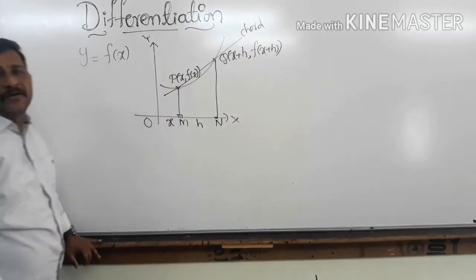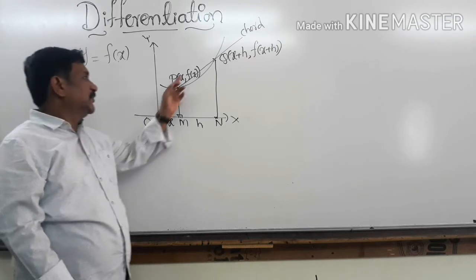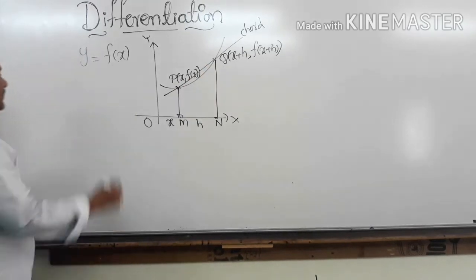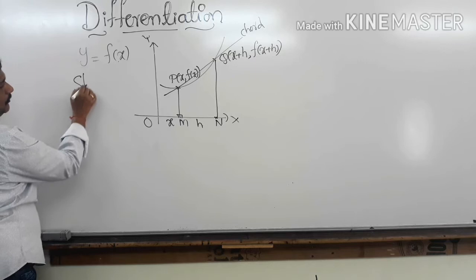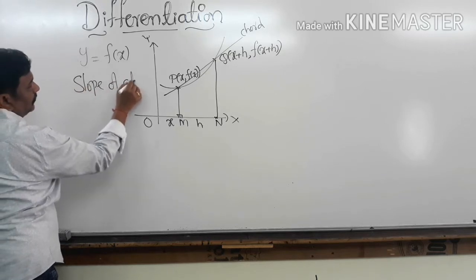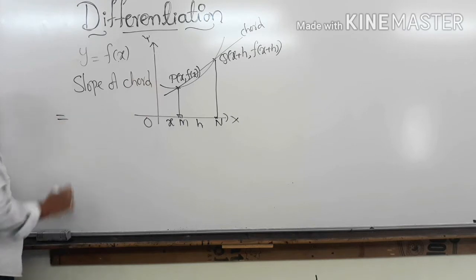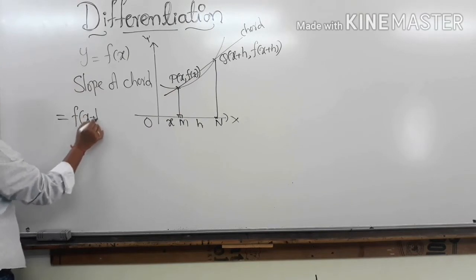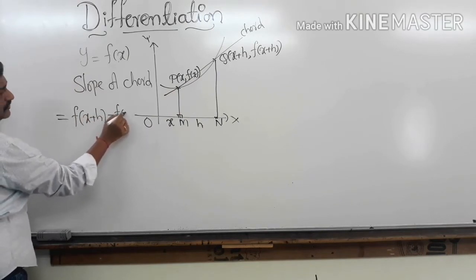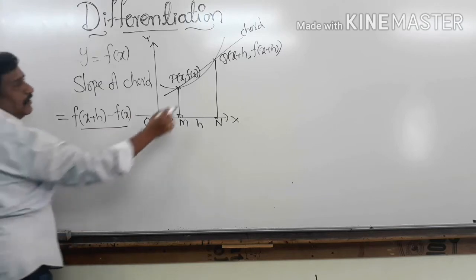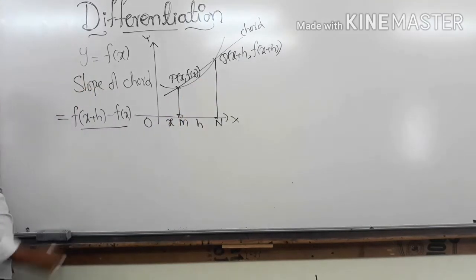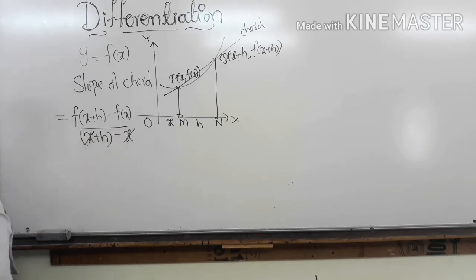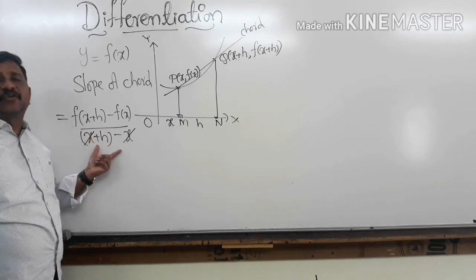PQ is the chord. For any line between two points, we find its slope. So we find the slope of the chord. The slope of chord PQ is the difference of y-coordinates divided by difference of x-coordinates: [f(x + h) − f(x)] / [(x + h) − x], which simplifies to [f(x + h) − f(x)] / h. This is the slope of the chord.